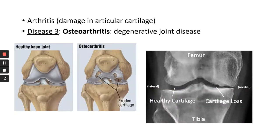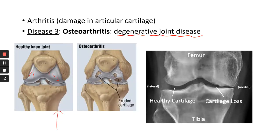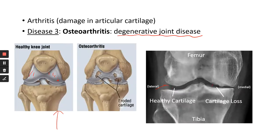The next disease is osteoarthritis — a degenerative joint disease. The degeneration takes place in the articular cartilage. You can see what normal cartilage looks like compared to a patient with this disease — the cartilage is really worn out, with a lot of erosion. On an X-ray, with healthy articular cartilage you have a good space between the bones, but as the cartilage erodes, this space gets smaller and the two bones come too close together, causing a lot of pain.